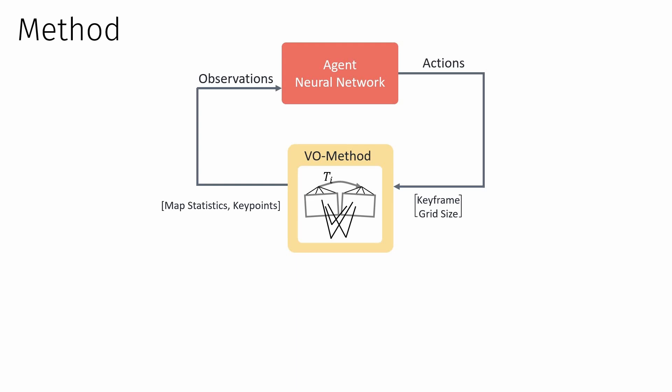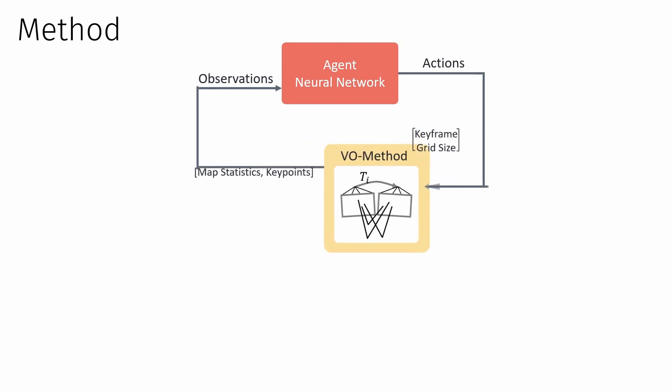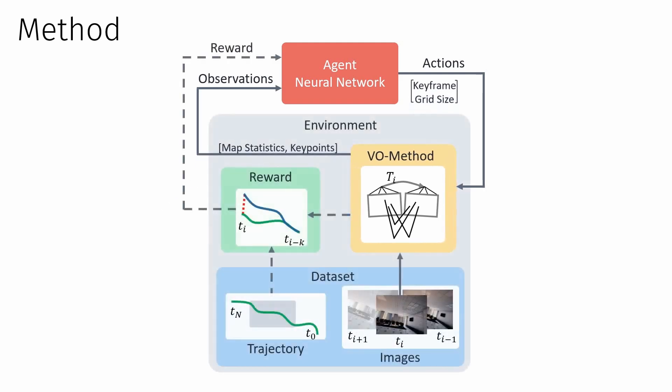Operating as a dynamic agent, the neural network guides decisions within the VO pipeline. These decisions include the triggering of keyframes and the grid size parameter used to detect features. We formulate the visual odometry task as a sequential decision-making problem, where current actions influence future states.